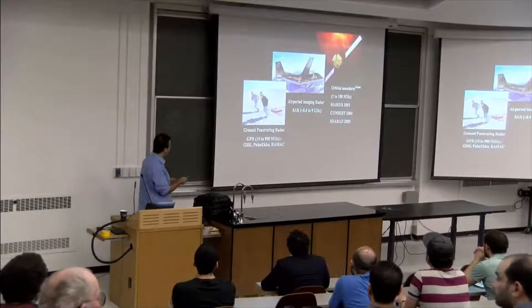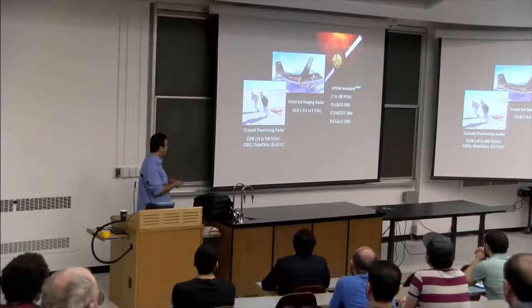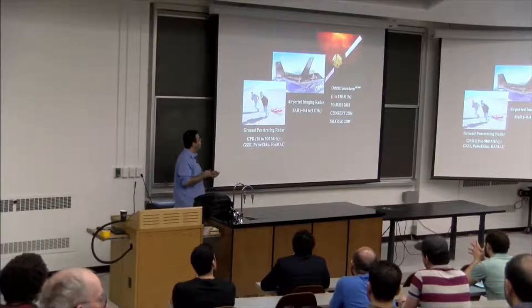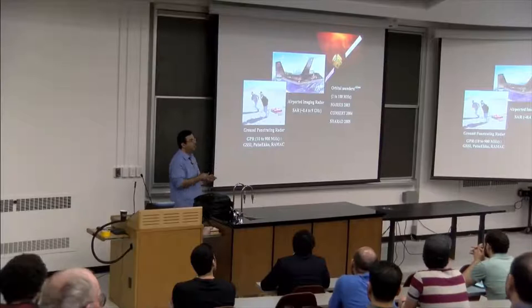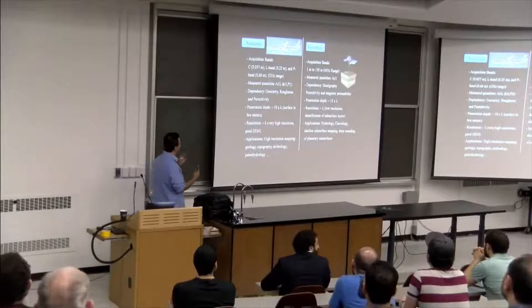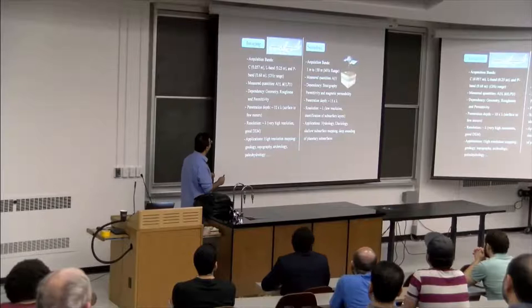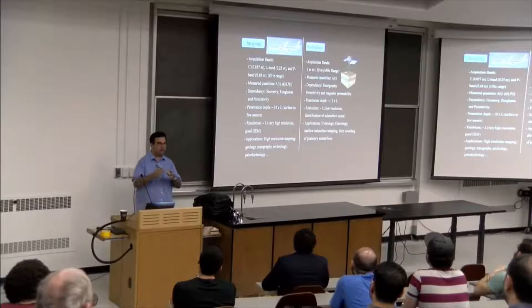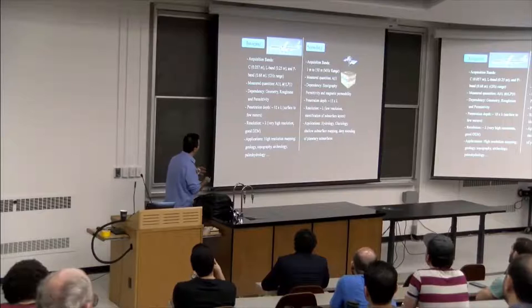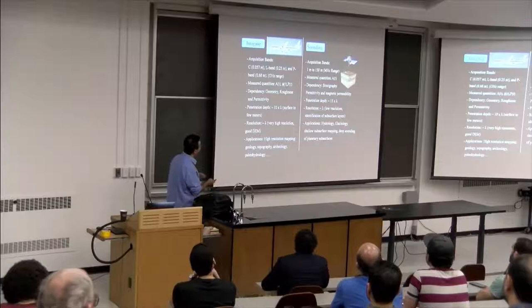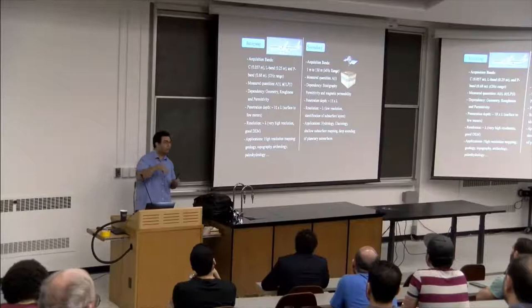There are three types of radar systems: ground-penetrating radar used on the ground, airborne systems used at airports, and orbital systems. Many people are familiar with the first two, but very few with the orbital ones because they are relatively new. There are two types of radar subsurface exploration: imaging and sounding. Imaging generates images at very high frequency, like synthetic aperture radar systems. Sounding uses lower frequencies and can penetrate a few hundred meters to kilometers into the subsurface.